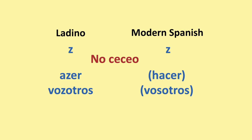There's no ceceo in Ladino. Ceceo is when the Z and the C before I or E is pronounced like a TH in English. Ladino pronounces the Z as a Z. For example, 'azer' instead of 'hacer' or 'hazer', and 'vozotros' instead of 'vosotros'.